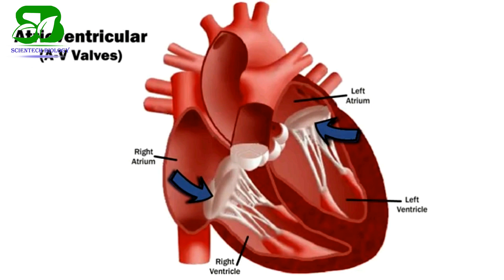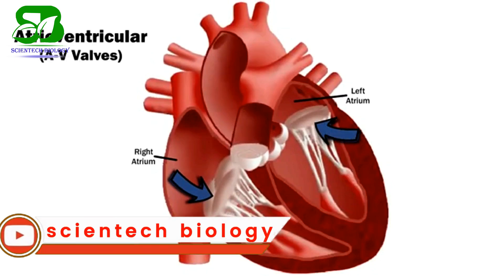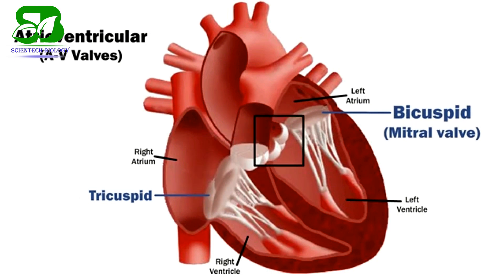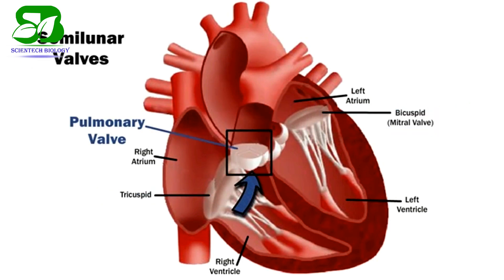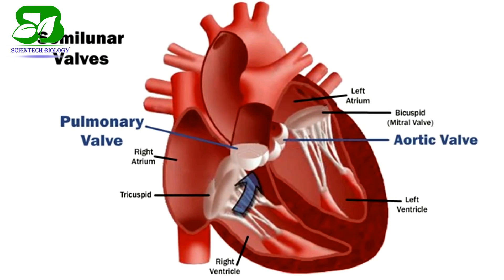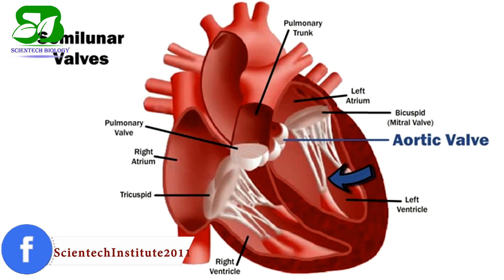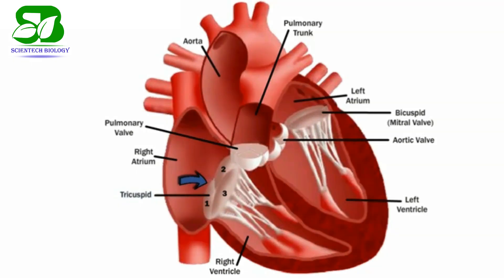The valves effectively move blood throughout the heart in one direction. The atrioventricular or AV valves are between the atria and ventricle on each side of the heart — they are the tricuspid and bicuspid or mitral valve. The tricuspid is on the right side and the bicuspid is on the left side. There are also two semilunar or SL valves: the pulmonary and the aortic valve. The pulmonary valve is between the right ventricle and the pulmonary trunk, and the aortic valve is between the left ventricle and the aorta. The tricuspid has three flexible cusps or leaflets, and the bicuspid valve has two.